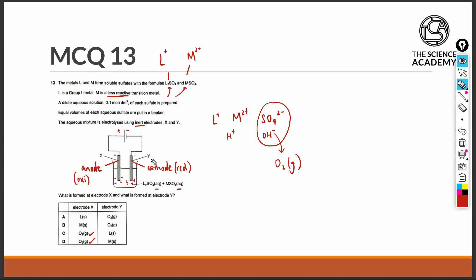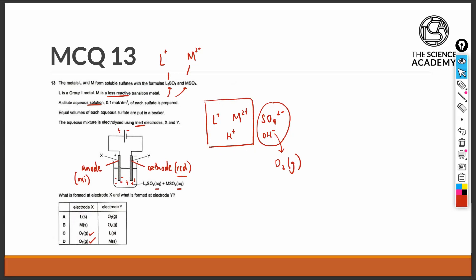At the cathode or electrode Y, cations are the ones attracted. We would expect the hydrogen ion to be the one that is preferentially discharged because the electrolyte is a dilute aqueous solution.